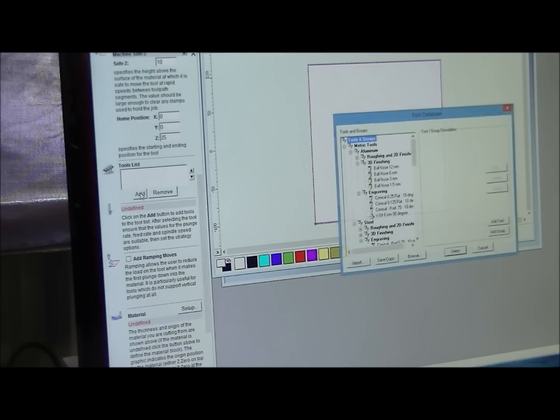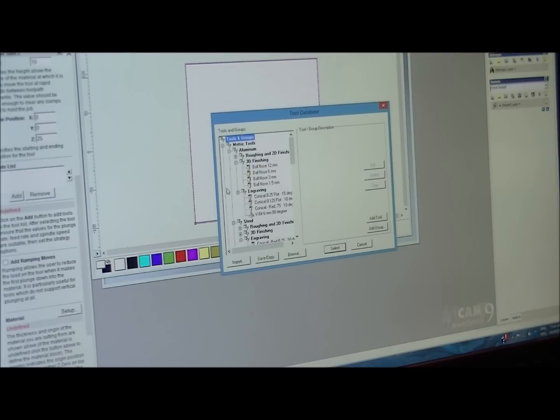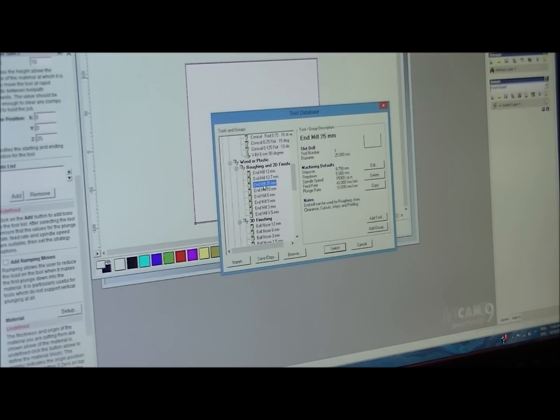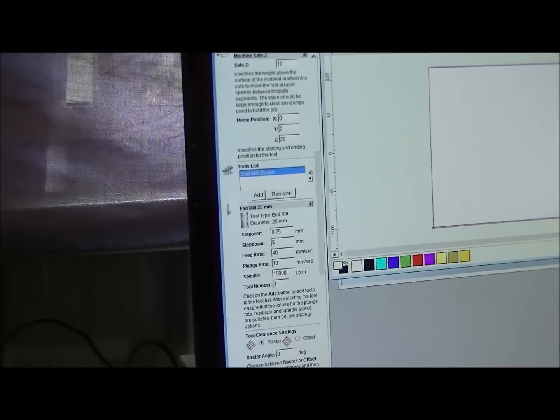And tool list. So we want to add a tool. I'll just swing that a little bit. Now then, we're dealing with wood. Metal tools. Roughing aluminium. So when you go down here, here we go. Wood and plastic. And we're doing it with an end mill and it's a 25 millimeter end mill. And we're going to select that. Back to this dialog box.